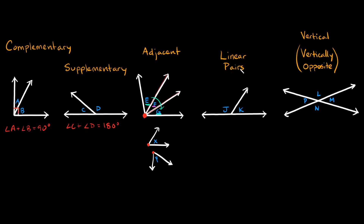Now linear pairs. Linear pairs are just adjacent angles that are supplementary — or in other words, they add up to 180 degrees. So angle J and angle K are linear pairs because they're next to each other and they add up to 180 degrees. But if J and K had different vertices, they would not be linear pairs. Even if they add up to 180 degrees, they have to be adjacent — they need to share the same vertex.